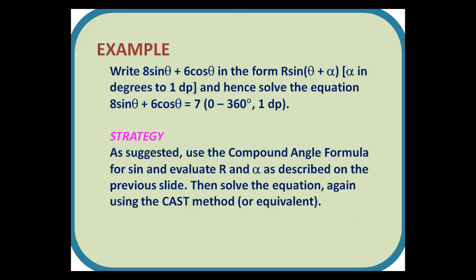Example. Write 8sin θ + 6cos θ in the form R sin(θ + α), where α is in degrees to one decimal place, and hence solve the equation 8sin θ + 6cos θ = 7, answers between 0 and 360° to one decimal place. Strategy: As suggested, use the compound angle formula for sine, and evaluate R and α as described on the previous slide. Then solve the equation, again using the CAST method or equivalent.